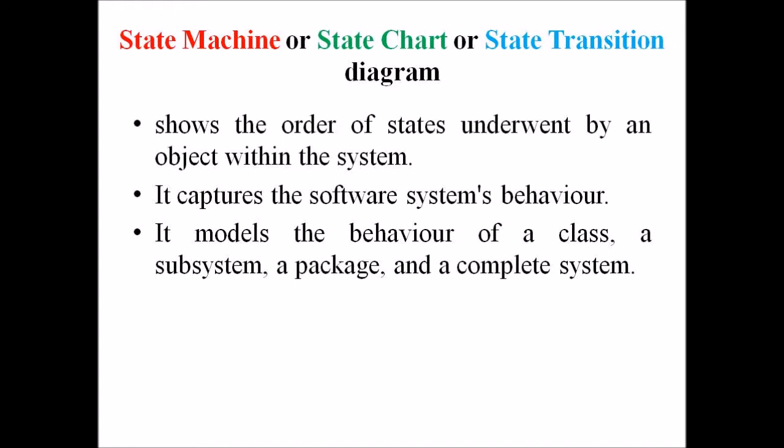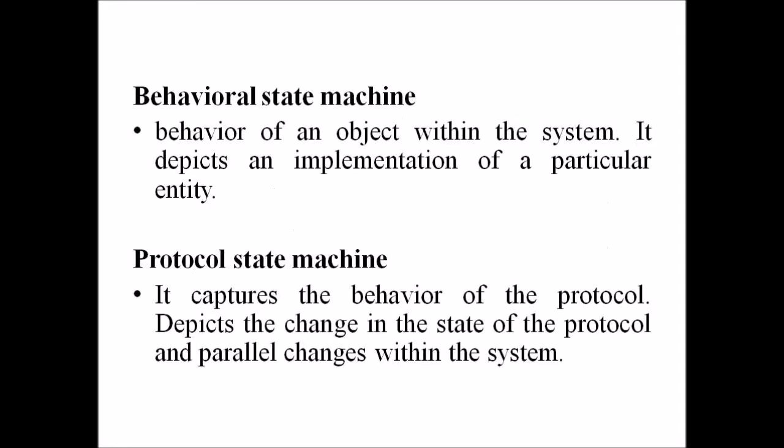Next we are discussing different types of State Machine Diagrams. The first is a Behavioral State Machine and the second is a Protocol State Machine. The Behavioral State Machine Diagram records the behavior of an object within the system and depicts an implementation of a particular entity — it models the behavior of the system. The Protocol State Machine captures the behavior of the protocol and depicts the change in state of the protocol and parallel changes within the system, but it does not portray the implementation of a particular component.